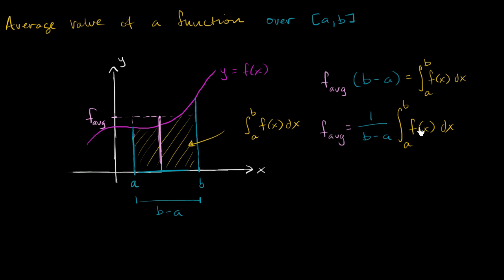Or another way to think about it: you figure out what the area under the curve is over that interval, divide that by the width, and you have the function's average — the average height. I'd like to remind you that you shouldn't just sit there and try to memorize this — just get a conceptual understanding of what this is really trying to say.